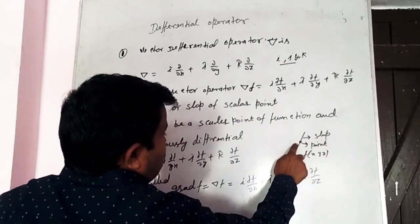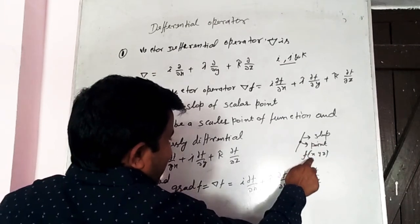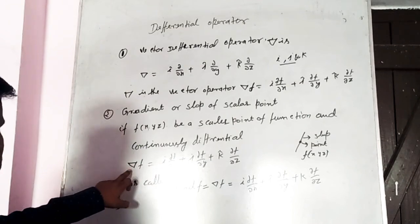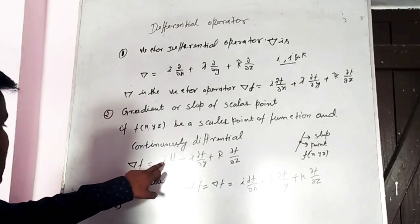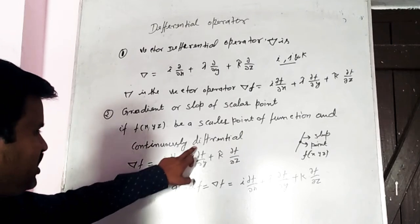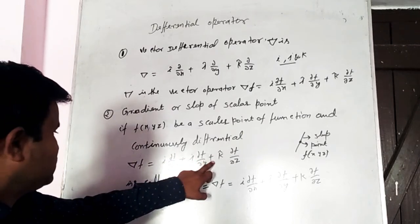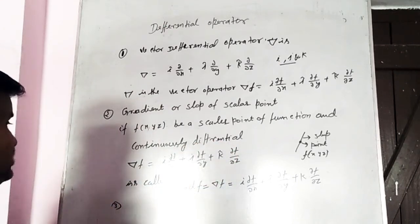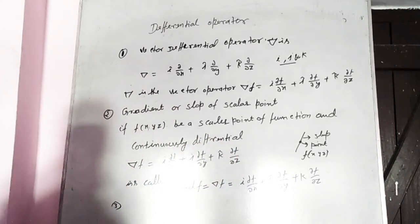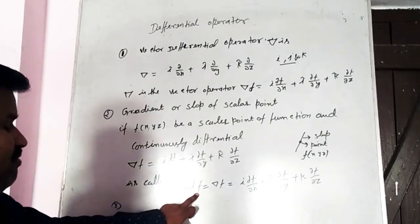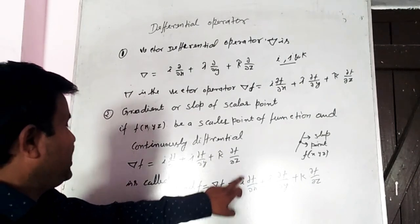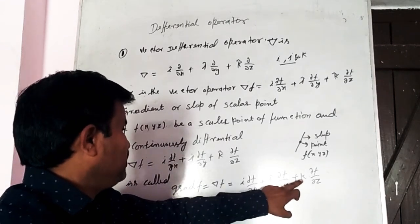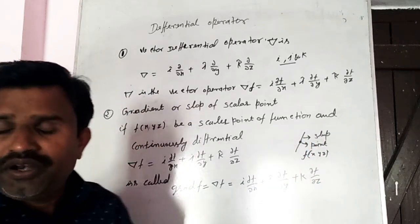The slope of point f(x, y, z): del f is equal to i ∂f/∂x + j ∂f/∂y + k ∂f/∂z. This is called grad f = i ∂f/∂x + j ∂f/∂y + k ∂f/∂z, where i, j, k are unit vectors.